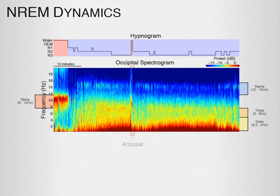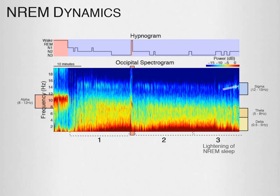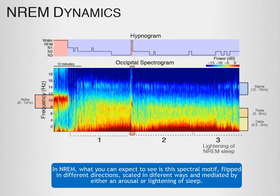Even within non-REM sleep there can be periods of arousal. We can see our typical non-REM spectromotif shown as segment 1. Then suddenly there is an arousal — upon arousal, non-REM resets to the beginning and our spectromotif appears again as segment 2. The motif can be longer or shorter but the progression of the pattern remains. The pattern can also be reversed, as shown in segment 3, which is a lightening of non-REM sleep — the delta decreases, the theta grows and fades away, and the sigma increases. In non-REM, what you can expect to see is the spectromotif flipped in different directions, scaled in different ways, and mediated by either an arousal or lightening of sleep.